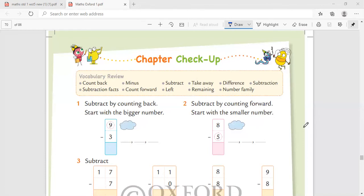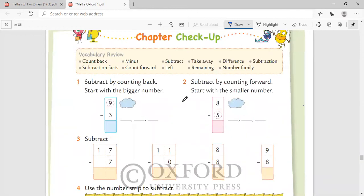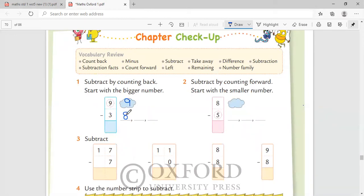We'll do some of the sums of this and solve it together. Subtract by counting back. Start with the bigger number. So what you have to do? You have to write the bigger number here and count back to subtract three times. So it's nine, eight, seven. You will write it here. We are doing backward counting. Final answer is seven.